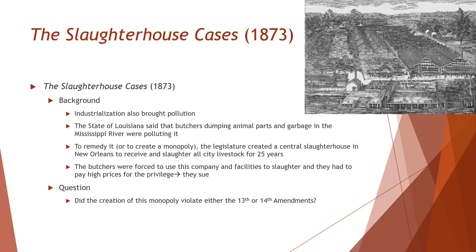One thing that rapid industrialization brings during this period is that people really weren't thinking about pollution — not thinking about what you're putting in the air or what you're putting in the water. So the state of Louisiana said that butchers dumping animal parts and garbage in the Mississippi River were polluting it.